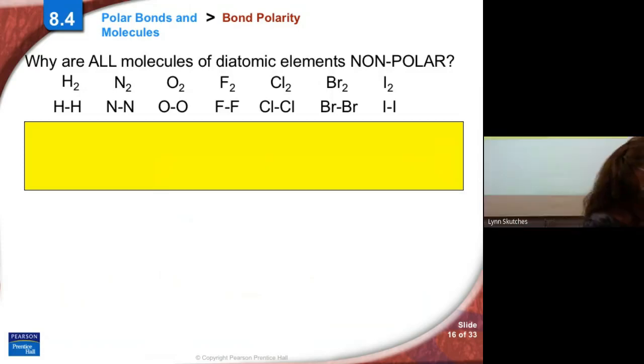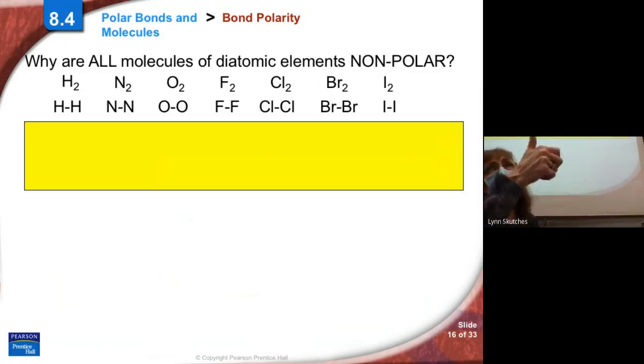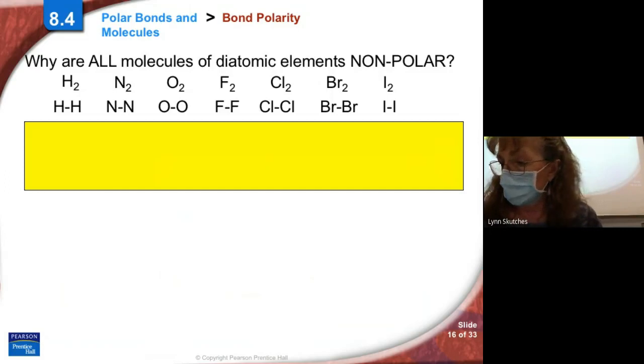Next question is kind of a silly question, but I have to ask it. Diatomic elements, remember there's seven of them. Hydrogen, nitrogen, oxygen, fluorine, chlorine, bromine, iodine. Why are they all nonpolar molecules? Turn to your neighbor and tell them. Why are they nonpolar? There's a very good reason. Look at your little chart on your note sheet. Why would they be nonpolar? Anybody? Why are they nonpolar?